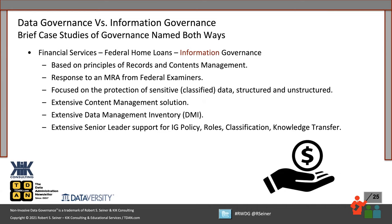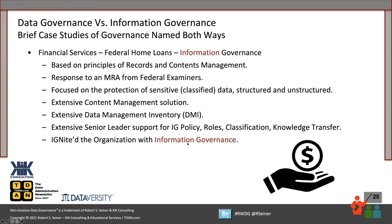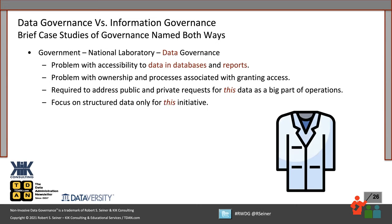Another organization in financial services focusing on federal home loans calls it information governance, and their program is based on principles of records and content management. They received an MRA — a matter requiring attention — from their examiners, which meant they needed to address how they were governing their records and content management. Focusing on protection of sensitive data, extensive content management solutions, and a data management inventory, they called it IG — information governance. Their slogan was that they were 'igniting the organization' with information governance. For them, it was never a question — they never used the term data governance.